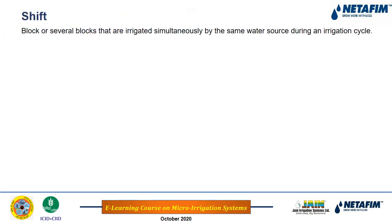A shift is a block or several blocks irrigated simultaneously by the same water source during the irrigation cycle. For example, a 10-hectare farm is generally not irrigated entirely in a single shift. Depending on the available flow rate — say 20 m³/hr — we divide the area into smaller units to balance the available flow rate with the design flow rate, making the design cost-optimum.